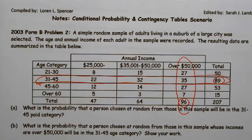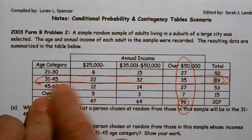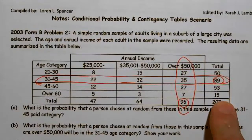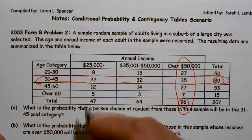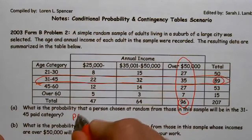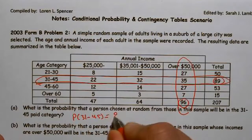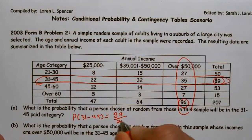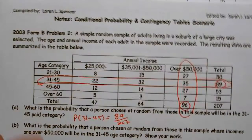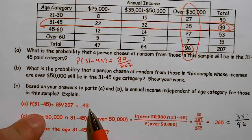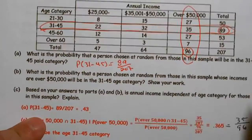What is the probability that a person chosen at random from the sample is in the 31 to 45 age category? Well, in the 31 to 45 category there are 89 people, so 89 over 207. The probability of 31 to 45 equals 89 over 207. Turn that into a decimal, and that would have gotten you credit. That's all you had to do.